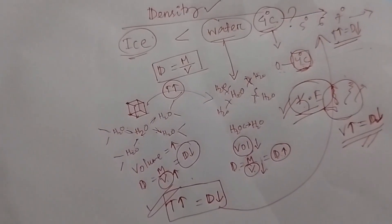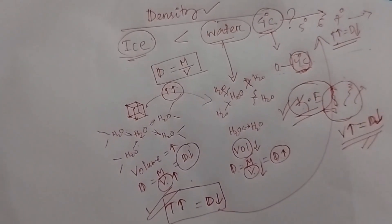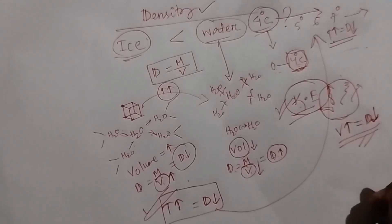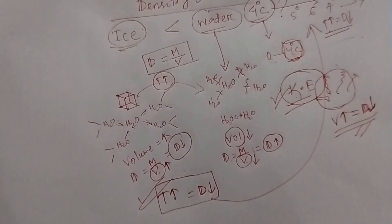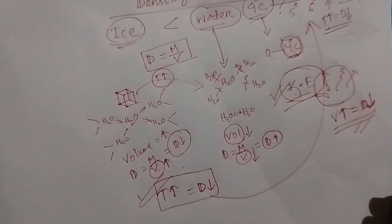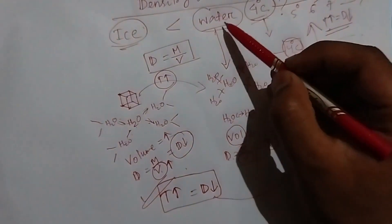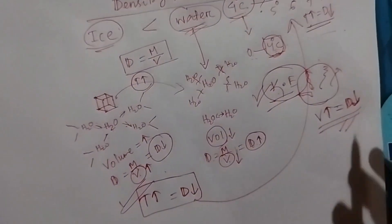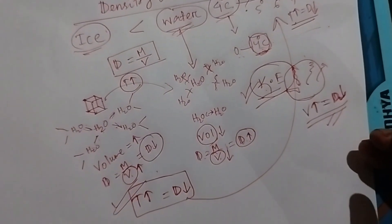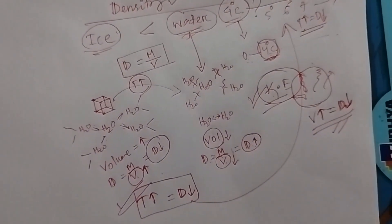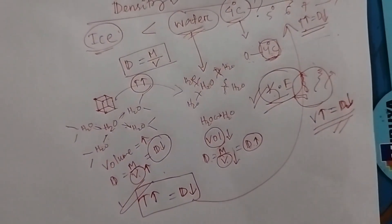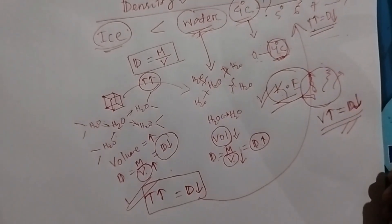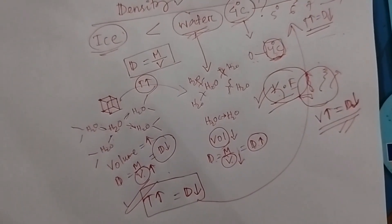This is all related to the density of ice and water, why four degrees Celsius is the maximum, and how the density is declining above four degrees Celsius in the case of water, as I expressed in this video. If you understood or have any doubts, you can ask in the comment section. Thank you.